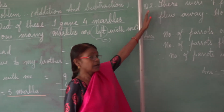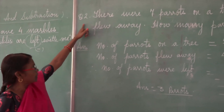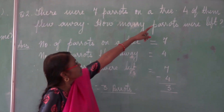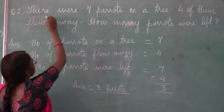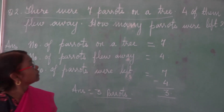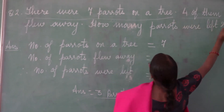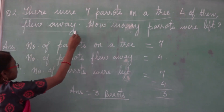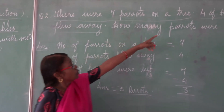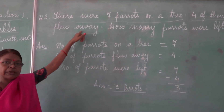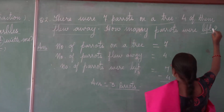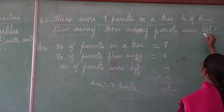Now we move on to the next question in subtraction. I am reading out the question again. There are seven parrots on a tree — full stop. From here to the full stop, you have to write the first statement. Four of them flew away — flew away means they went off from the tree. Again there is a full stop, so from 'four' to 'flew away' will be your second statement. How many parrots are left will be your third statement. Again the question uses the word 'left.'